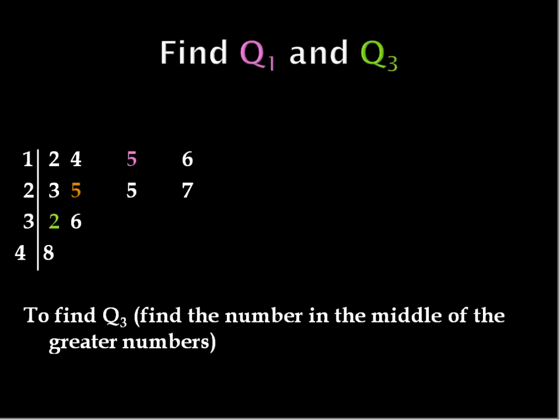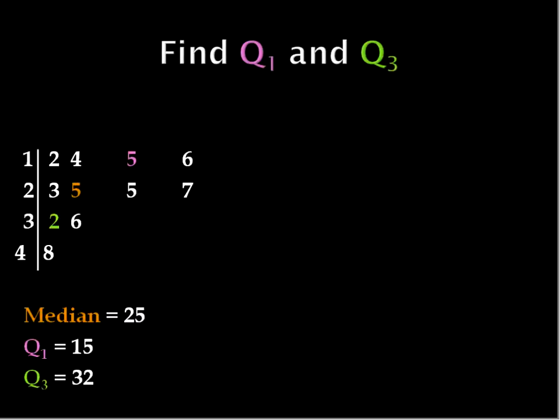For the third quartile, we're going to do the same thing that we did there. We're going to look at the higher numbers, the numbers above the median, 25, 27, 32, 36, and 48, and we'll identify that 32 has two numbers higher than that and two numbers lower, or two numbers lower inside of this stem and leaf plot. So quartile number three is represented by this number two, which represents the number 32. So that's how we would find those quartiles.